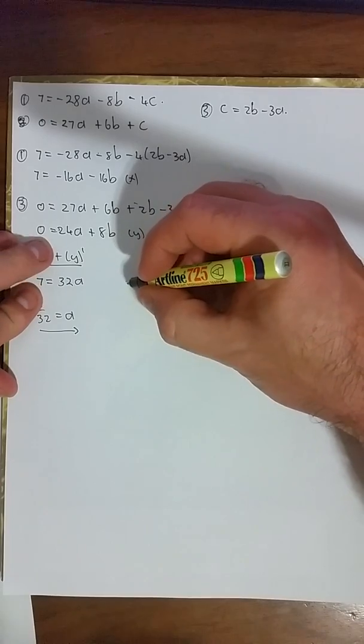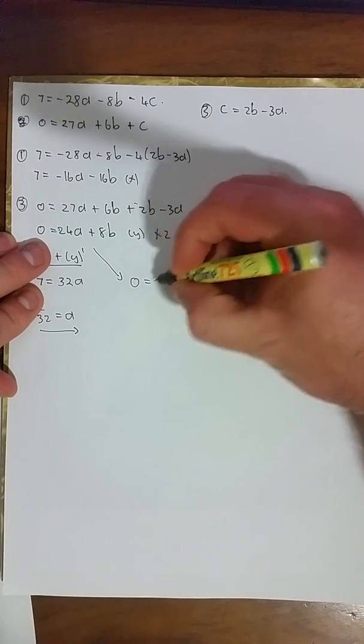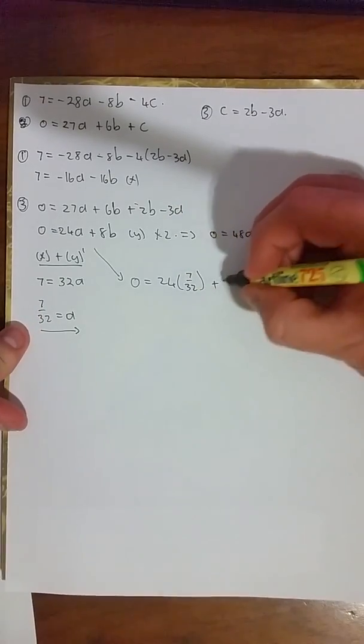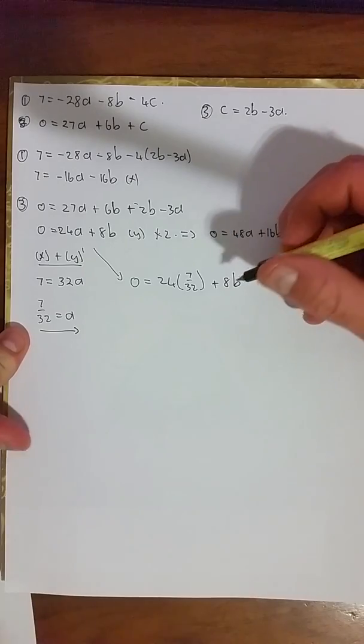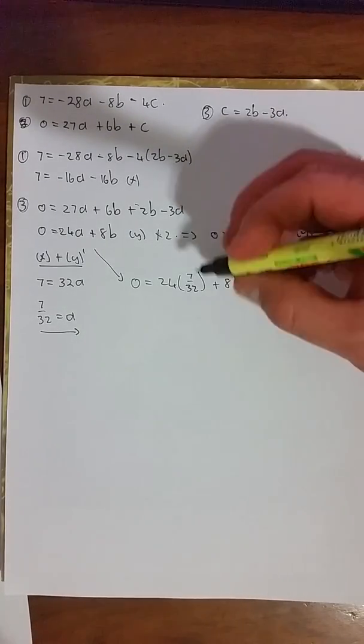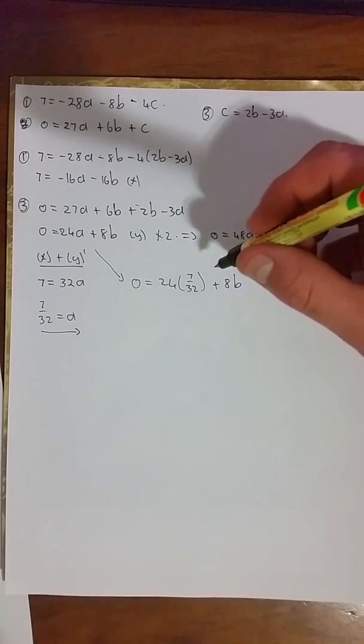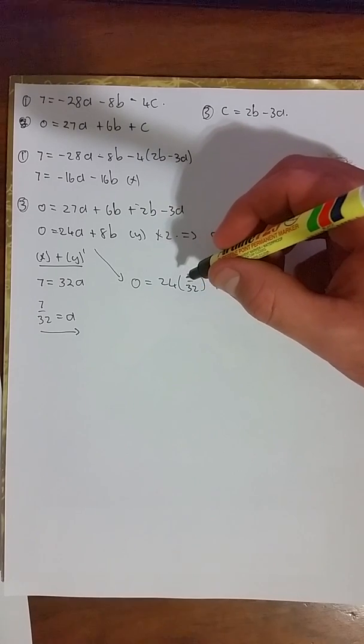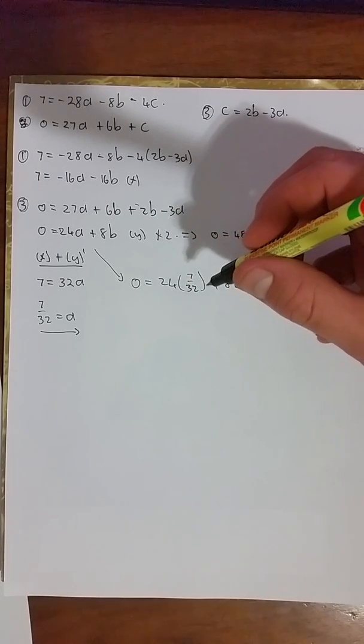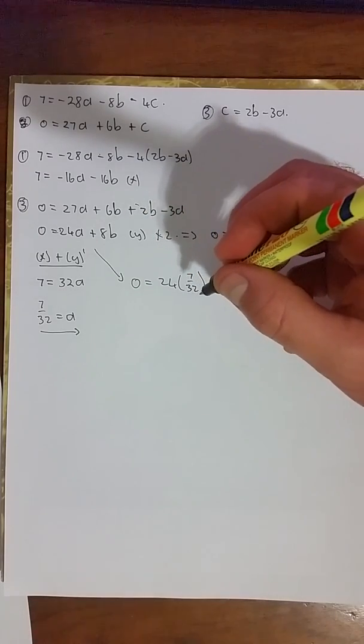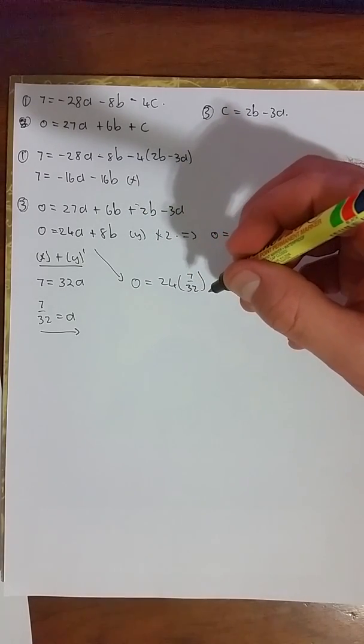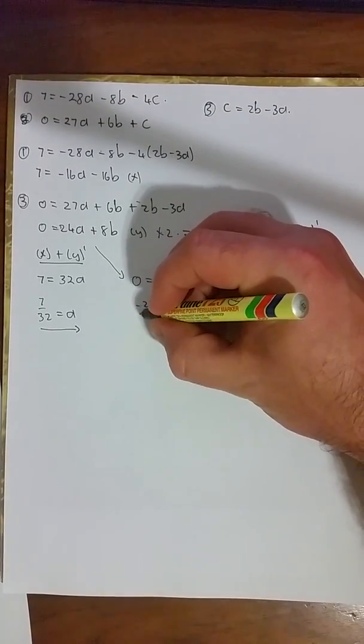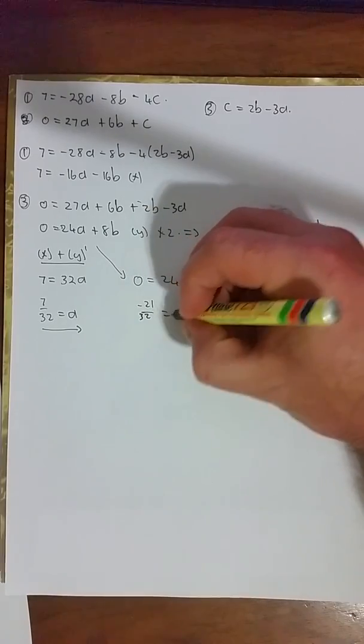So therefore, 0 = 24 × a, which was 7/32, plus 8b. Now, 24 × 7, that's 140 + 28, that's 168/32. And if you simplify all of this, what do you get? You will get -21/32, which will be equal to your b value.